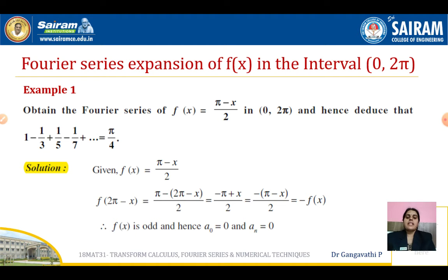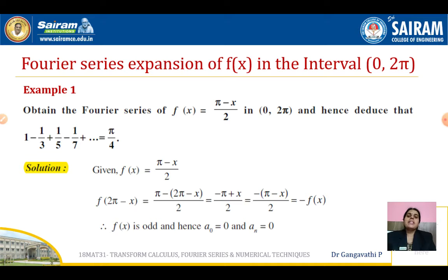The given function is f(x) = (π - x)/2. As usual, we are going to check whether the function is even or odd. But the process is slightly different here. For the interval minus pi to pi, we check f(-x) = f(x) for even and f(-x) = -f(x) for odd. Here, instead of replacing x by minus x, we replace x by 2π - x because the interval is 2π, completing one cycle.